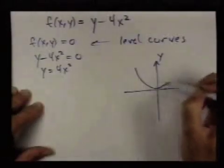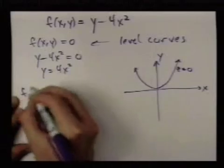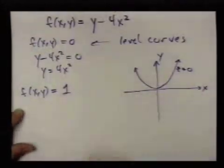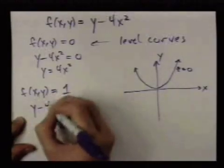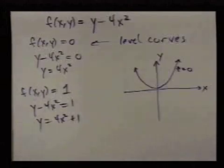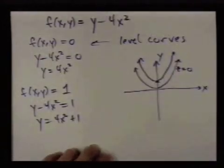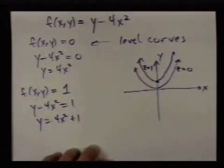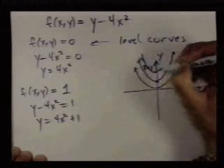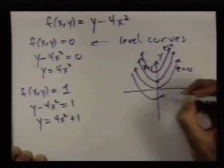So this corresponds to z equals 0. If I look at another level curve, another curve that comes from setting f equal to a constant, say 1, I'll have y minus 4x squared equals 1, or y equals 4x squared plus 1. It's just the same graph shifted up 1, and so this corresponds to a z value of 1. This example is actually pretty simple, because if I do z equals 2, I'll just shift this up again, or if I did z equals minus 1, it would shift it down.